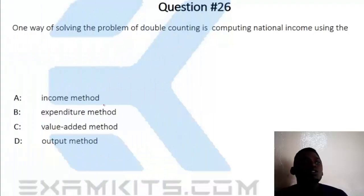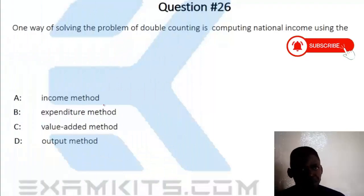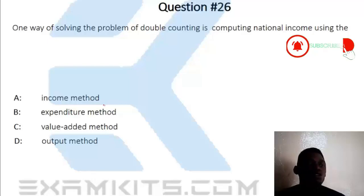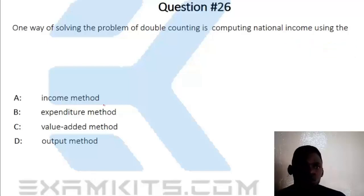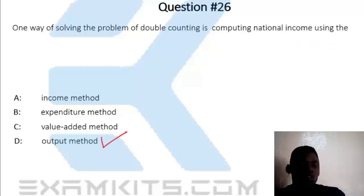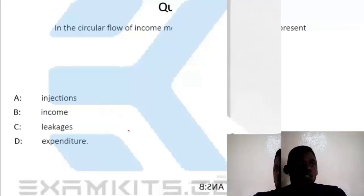Question 26. One way of solving the problem of double counting is computing national income using the output method, which is given as option D. That's the correct answer.